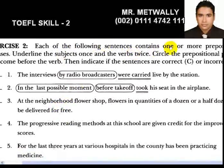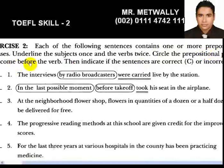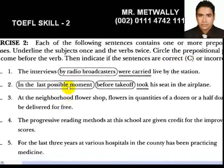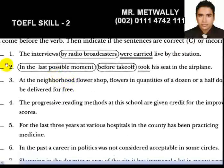Let's take Exercise 2 for more examples. Each of the following sentences contains one or more prepositional phrases. Underline the subject once and the verb twice, circle the prepositional phrase that comes before the verb, then indicate whether the sentences are correct or incorrect. One and two are already done, so we'll go directly to number three.